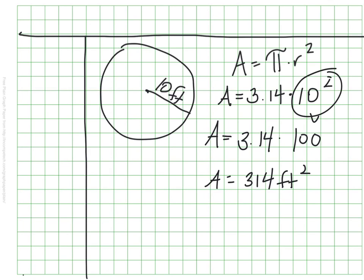How'd you do? Did you get 314 square feet? If so, you followed the steps correctly. If, on the other hand, you maybe got 62 and 8 tenths feet squared, you might have accidentally done 10 times 2 to get 20, and then multiplied that by pi. Remember, 10 squared is 10 times 10 to get that 100. So nice job if you got 314 square feet, you correctly and accurately followed the rule for finding the area of a circle.